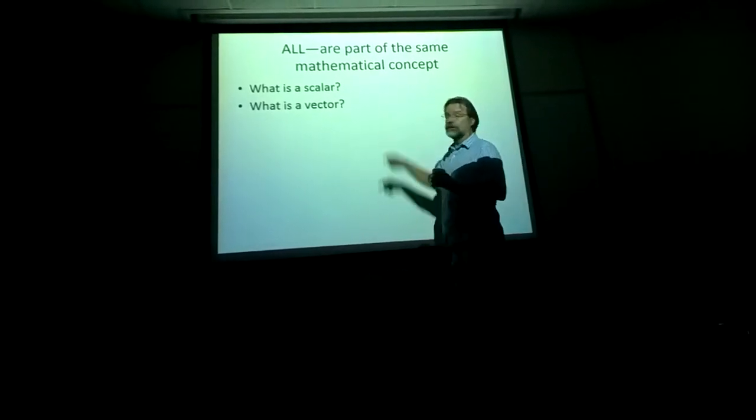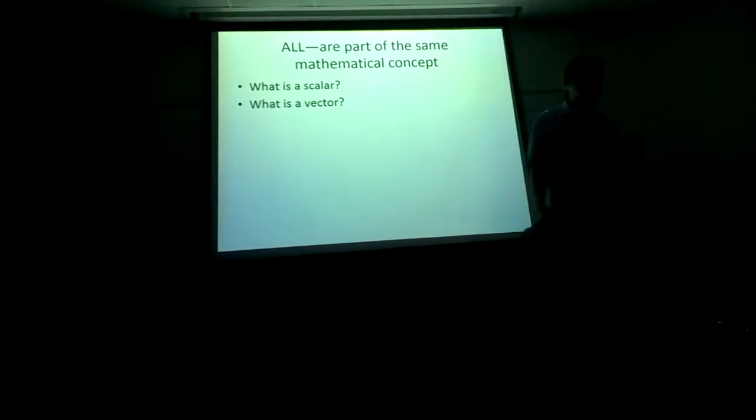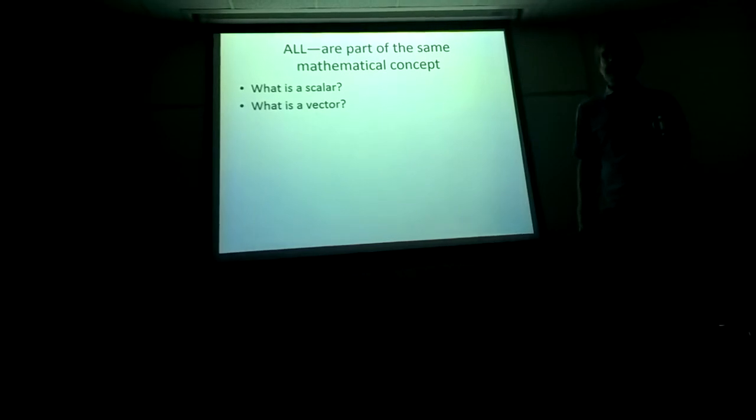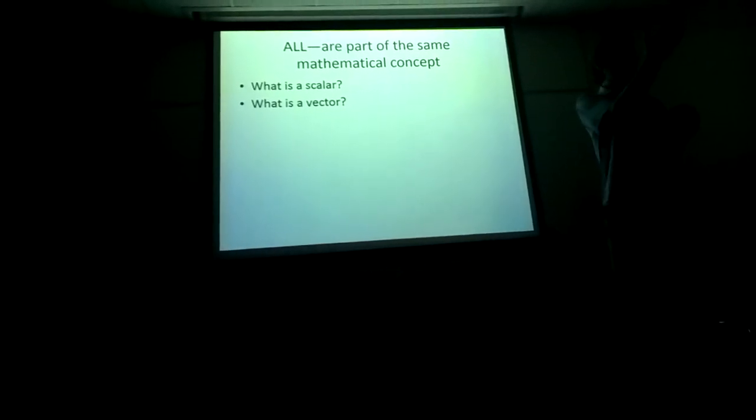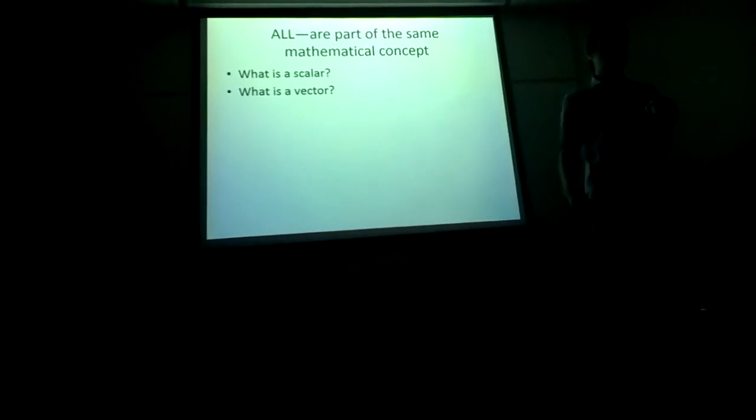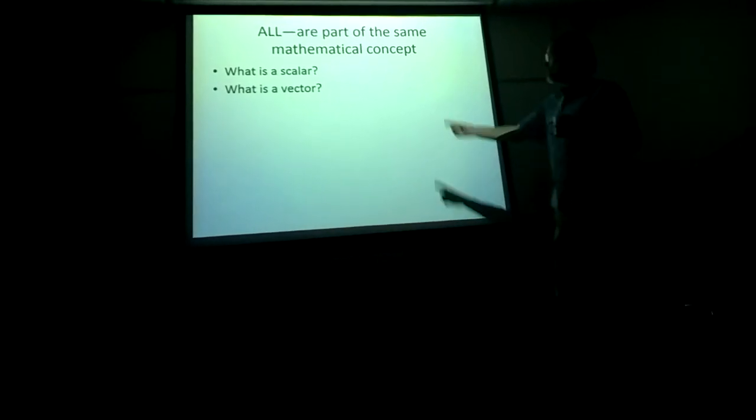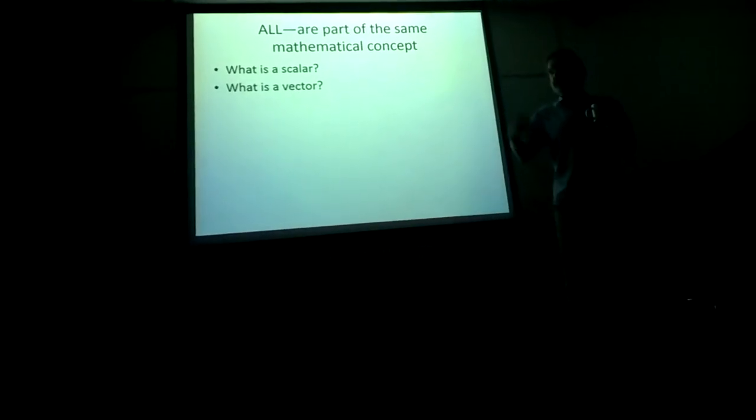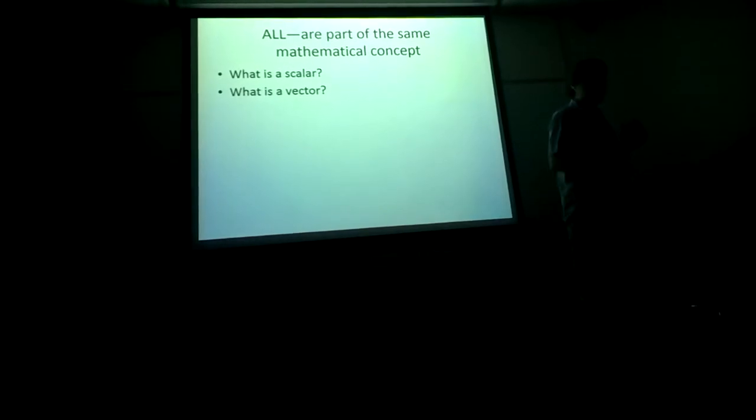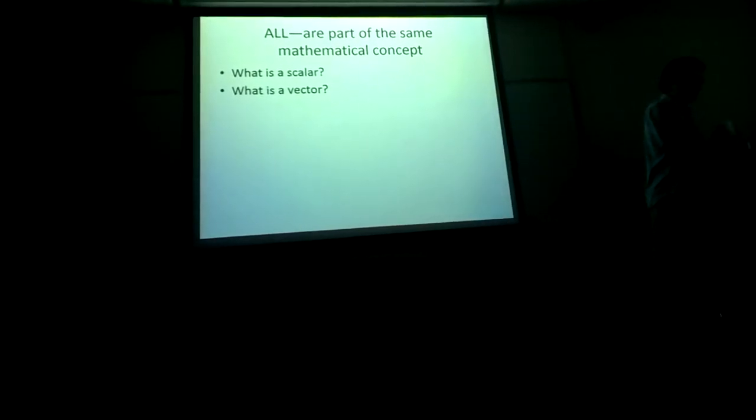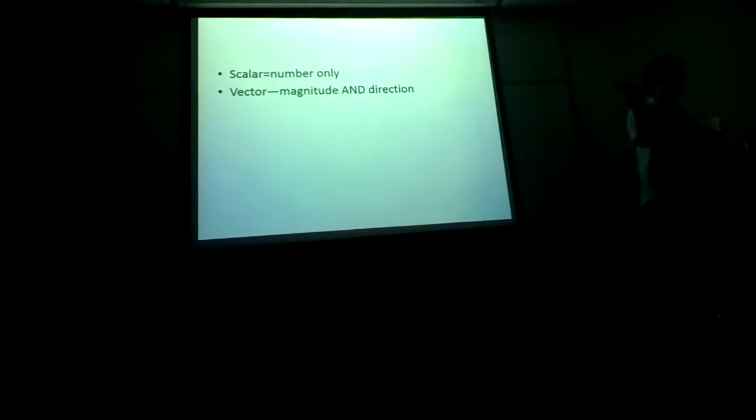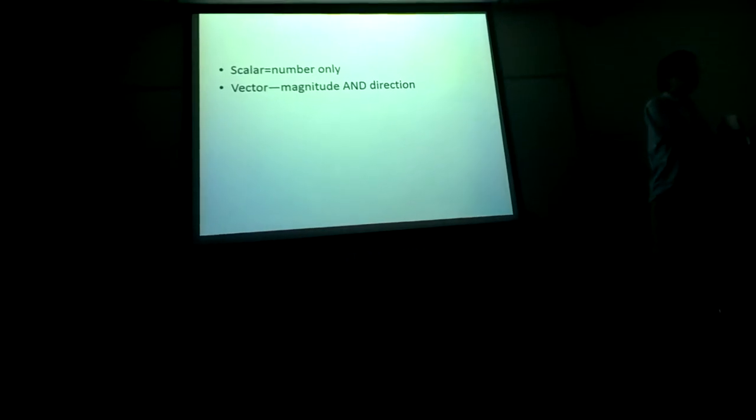Before we get there, what are these two quantities? What is a scalar? A scalar has magnitude. Only magnitude, right? It's a number. What about a vector then? It has direction and magnitude. So it has two different kind of features that characterize it.